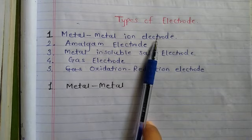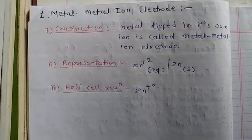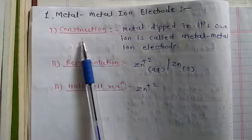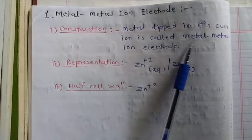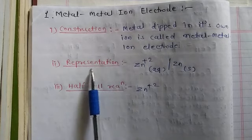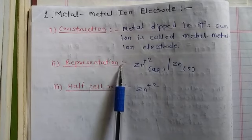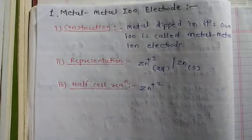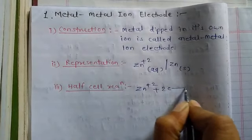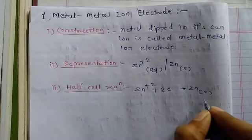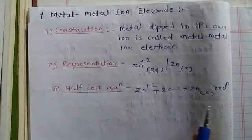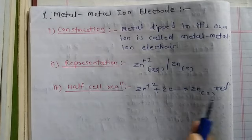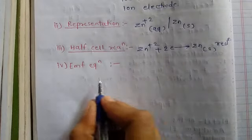The first electrode is the metal-metal ion electrode. In this electrode, a metal is dipped in its own ion solution — this is called a metal-metal ion electrode. The representation is: Zn²⁺ (aqueous) | Zn (solid). The half-cell reduction reaction is: Zn²⁺ + 2e⁻ → Zn (solid). The oxidation reaction is the reverse, where Zn loses two electrons.